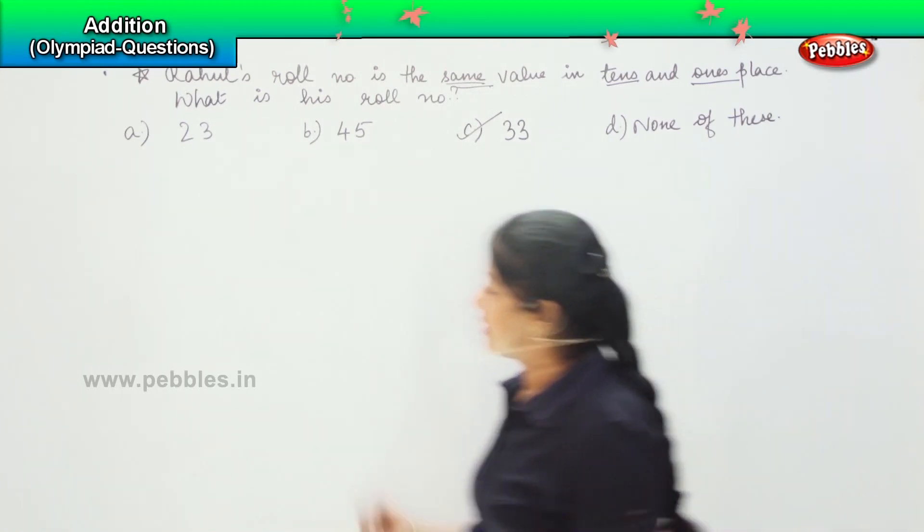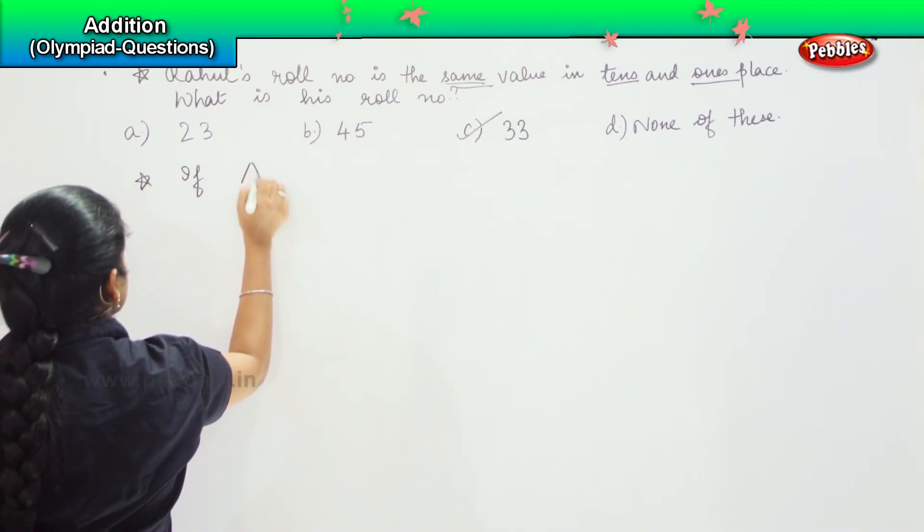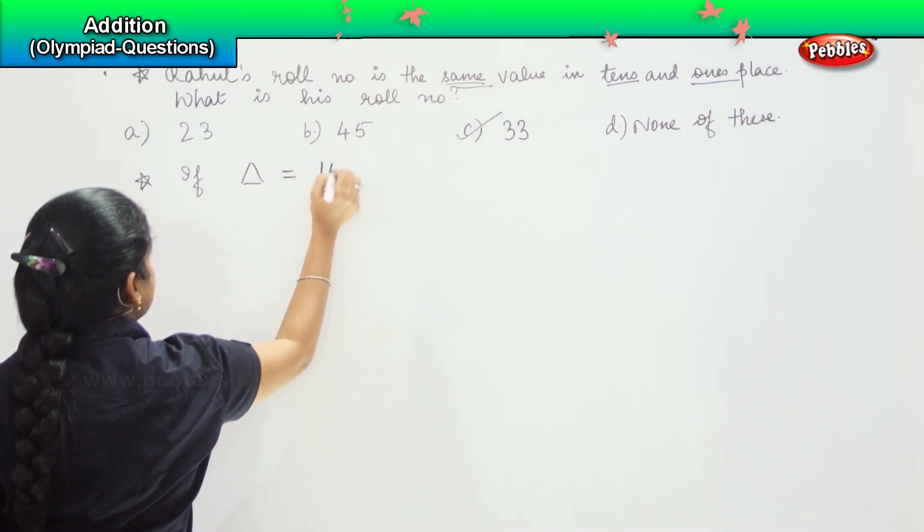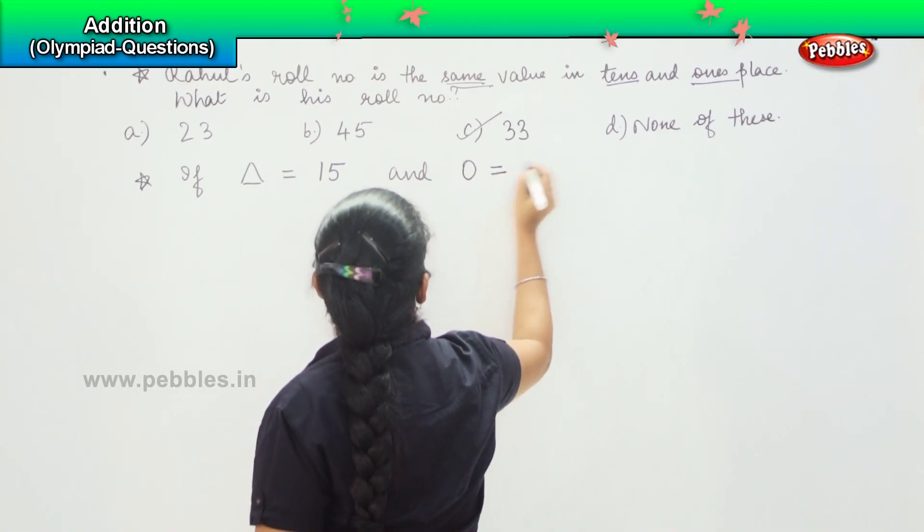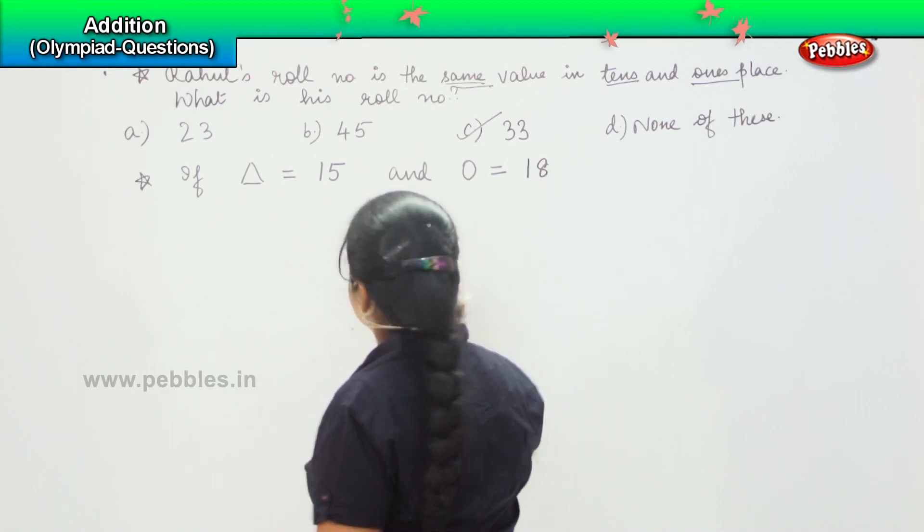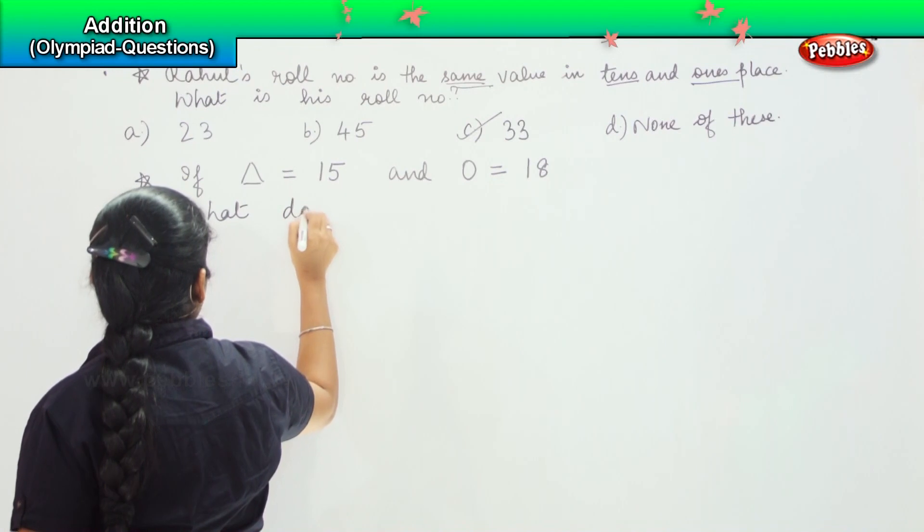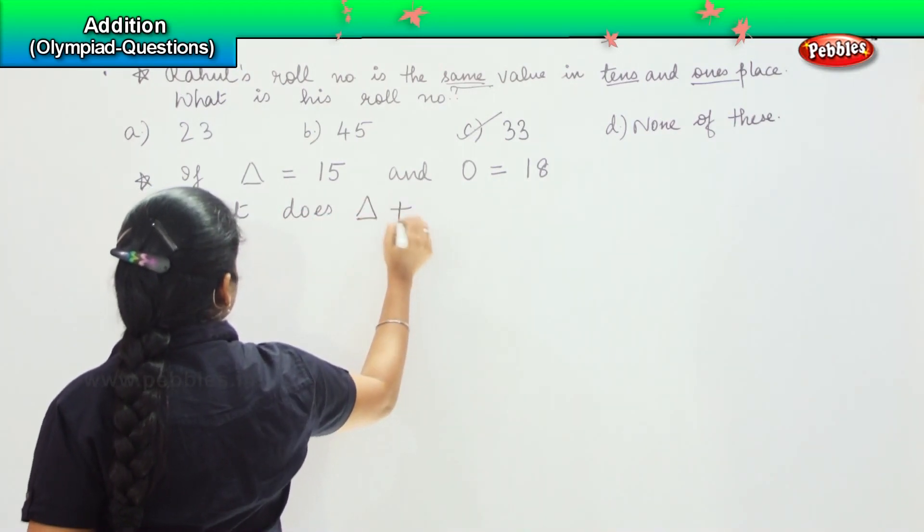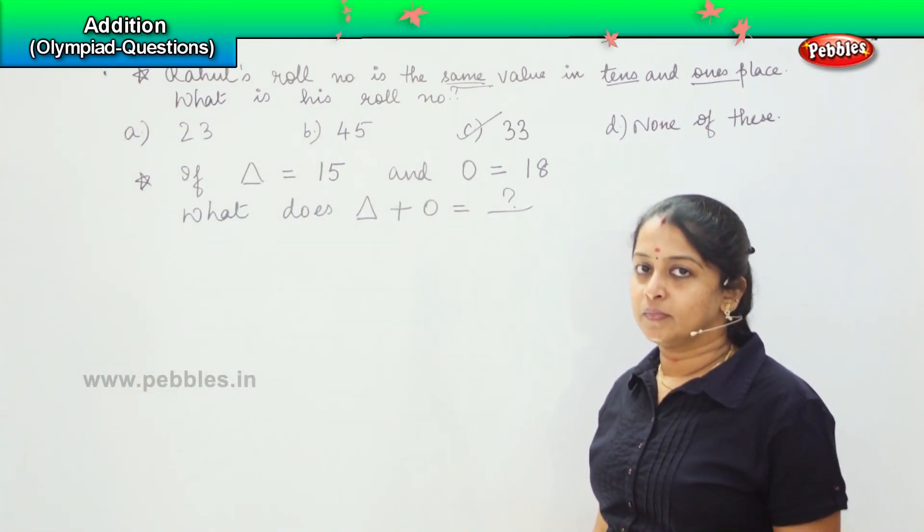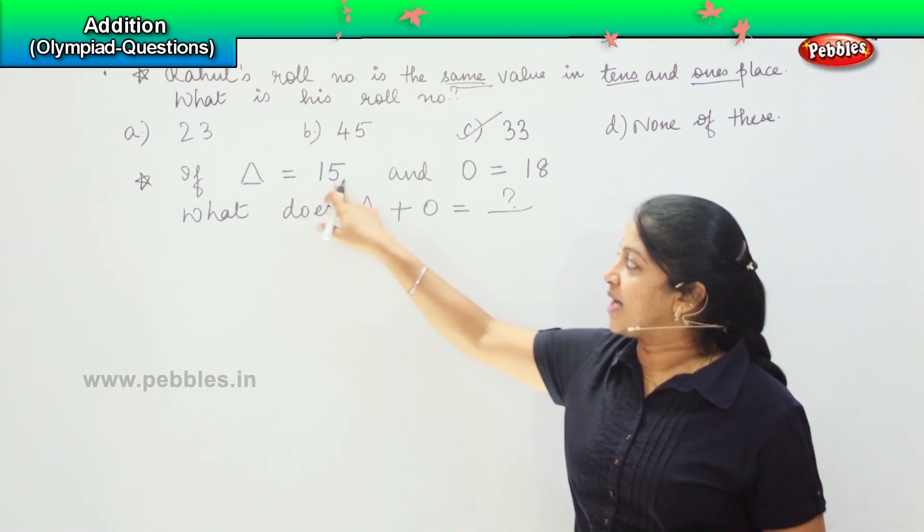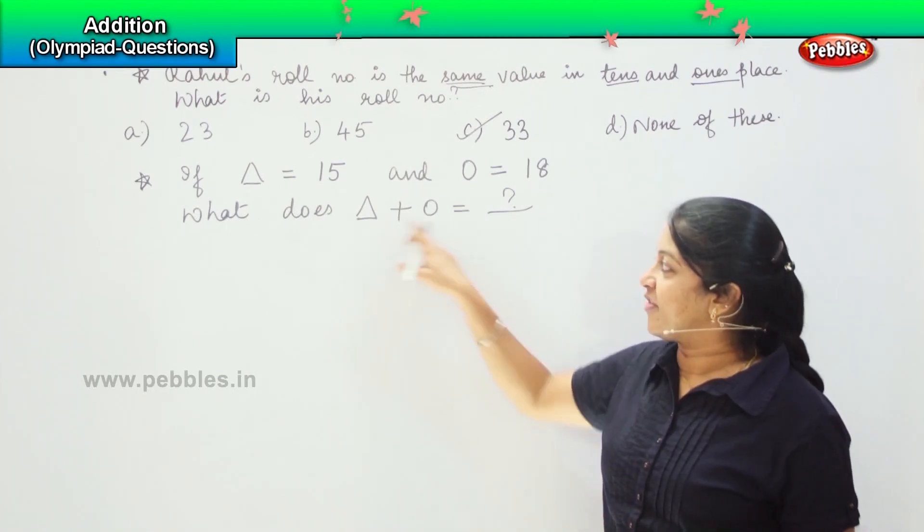My question is: if this triangle equals 15 and this circle equals 18, what does triangle plus circle equal? Which means that if triangle's value is 15 and circle's value is 18, find the total of triangle plus circle.